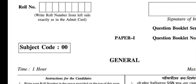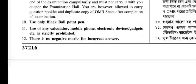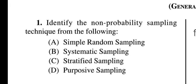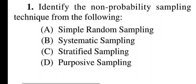In this video I will discuss NET, SLAT, or SET exam Paper 1 question paper of previous years. The first question asks: identify the non-probability sampling technique from the following — simple random sampling, systematic sampling, stratified sampling, purposive sampling. The answer will be purposive sampling.